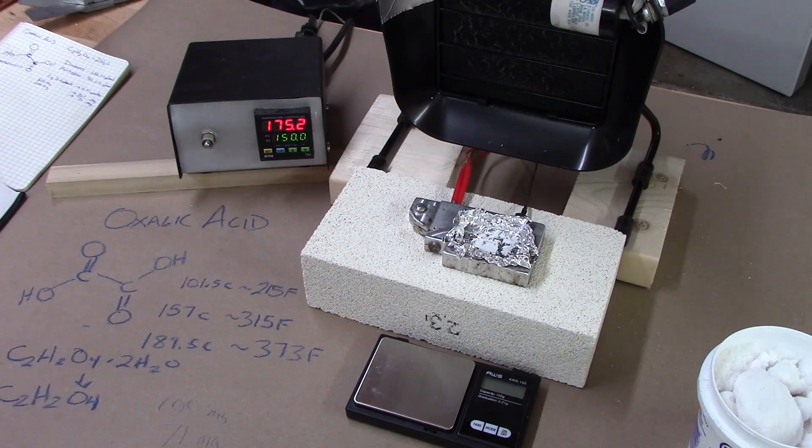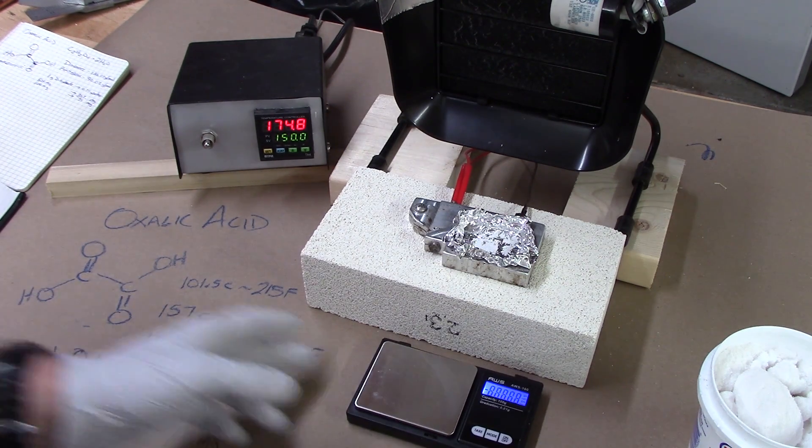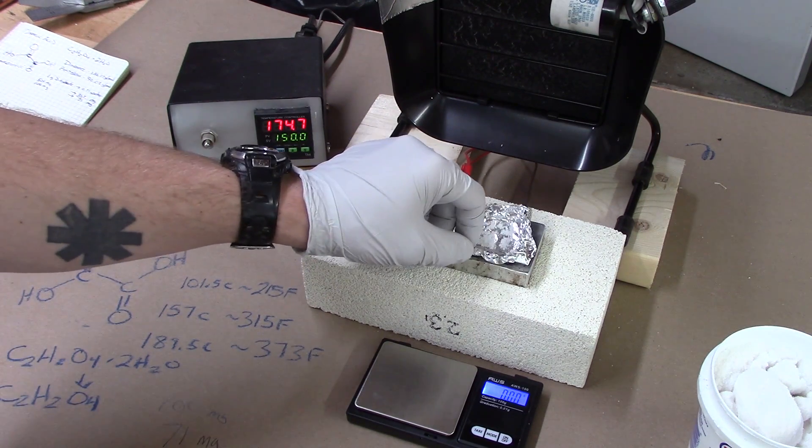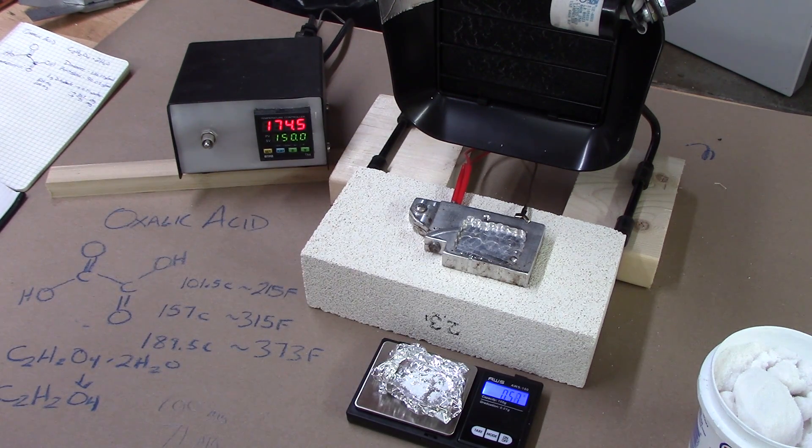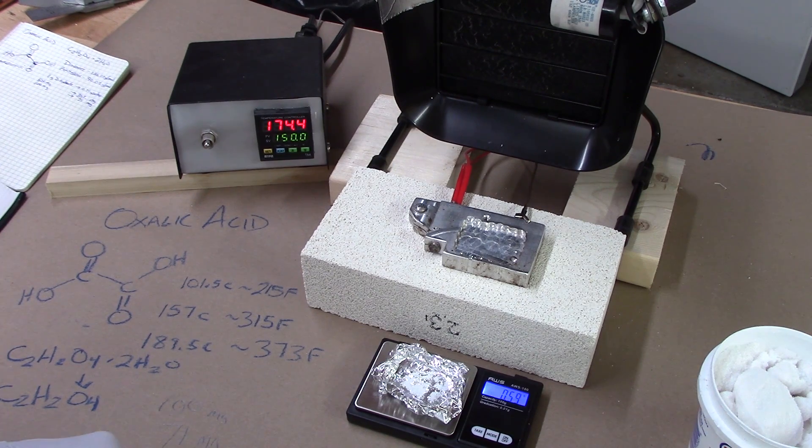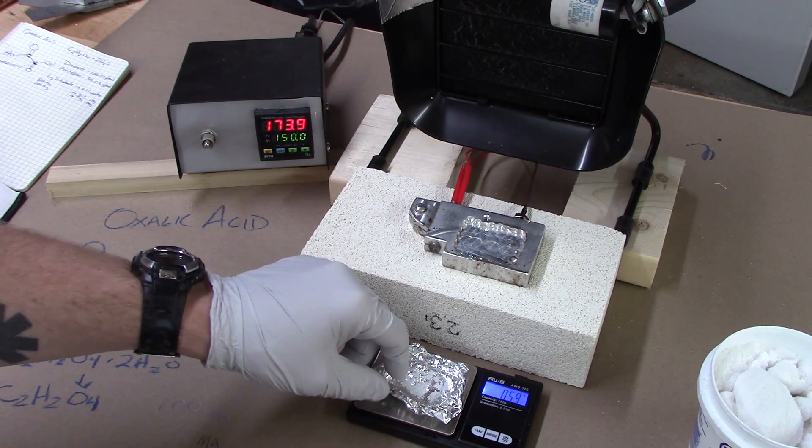And then at 315 Fahrenheit, this is the sublimation temperature that's listed in the documentation. I think it's going to sublimate way below 315 Fahrenheit, but we'll see what happens as we approach 315. And then finally at 373, this is the temperature we'll see it turn liquid, and that's the decomposition into its byproducts of formic acid and whatever else it decomposes into. So I've got it warming up right now at just about 100 degrees. All right, so we're at like 175, and it's been heating up slowly. And already we've dropped about 10 milligrams.